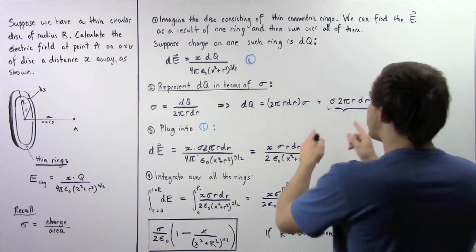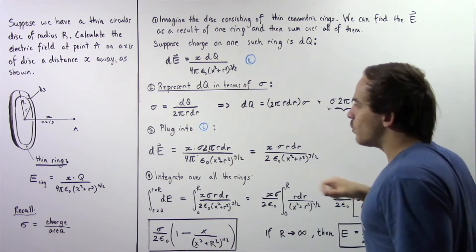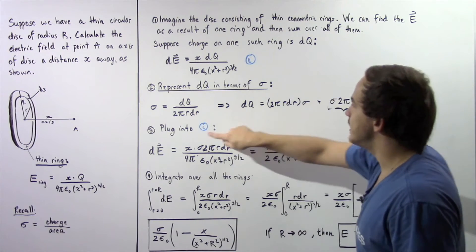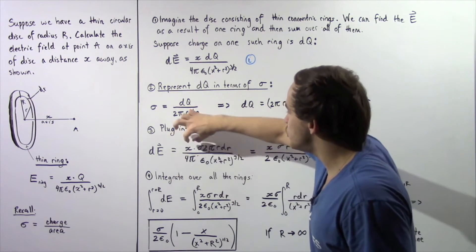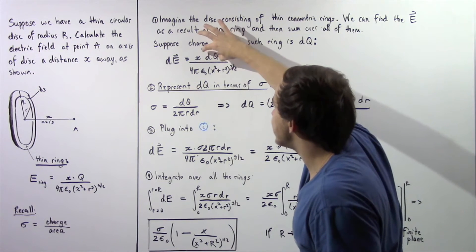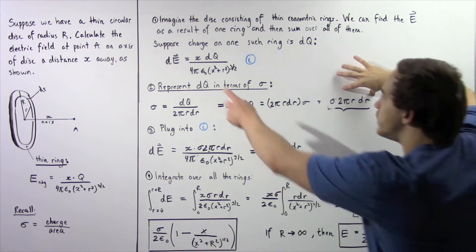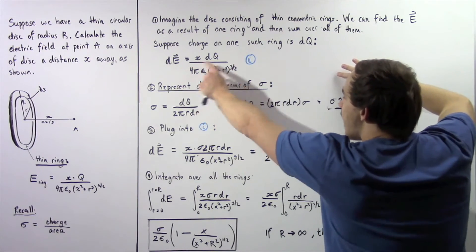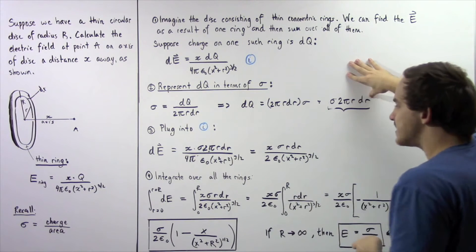So now we take this and replace it into this. So we plug this quantity into equation 1. And we see that dE is equal to x multiplied by dq, which now becomes this whole product. And we divide that by this entire denominator.